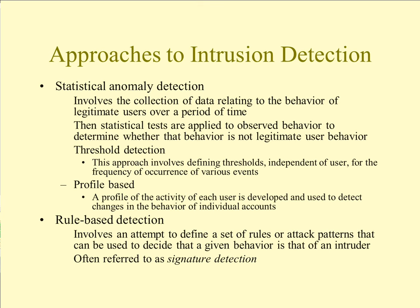Two approaches to intrusion detection are statistical anomaly detection and rule-based detection. Statistical anomaly detection involves collecting data about the behavior of legitimate users over a period of time and determining with a high level of confidence whether current behavior is legitimate or not. Threshold detection defines thresholds independent of the user for the frequency of occurrence of various events. Profile-based detection develops a profile of the activity of each user to detect changes in individual account behavior. Anomaly approaches attempt to define what's normal, whereas the signature-based approach attempts to define proper behavior.